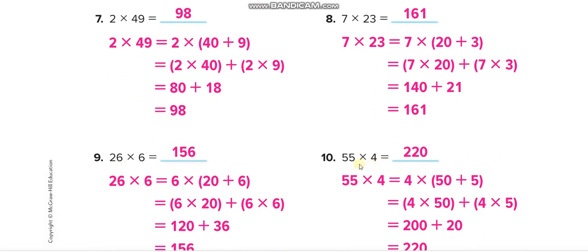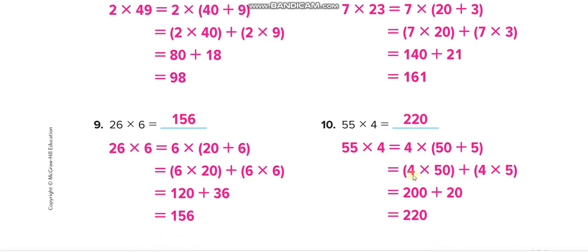See the last one: 55 times 4. We can write it as 4 times 55, it doesn't matter. We can switch the numbers in multiplication. We'll break 55 into two numbers: 50 plus 5. So first 4 times 50, then 4 times 5. Here it is: 4 times 50 plus 4 times 5. Numbers with zeros are easy to multiply. 4 times 5 is 20, add one zero, and 4 times 5 is 20. Total is 220.